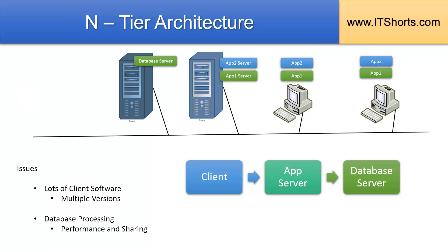So let me simplify the diagram a little bit in the interest of space. The database server got its own powerful server computer. The client contacts the application server, which serves the application to the client. Whenever it needs to access the underlying data, the application server contacts the database server, processes it, and sends the data to the client. So this is actually a three-tier architecture.